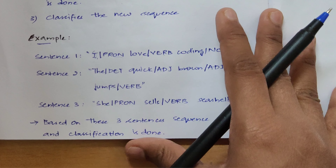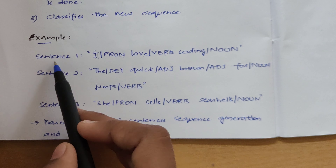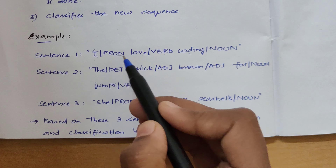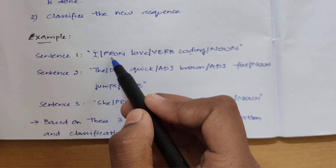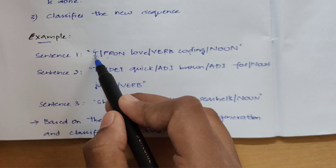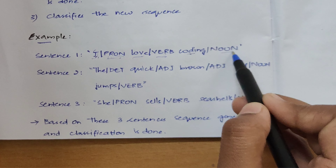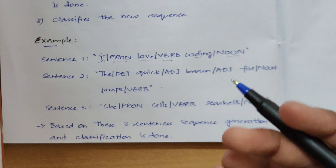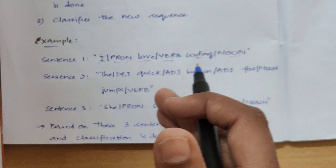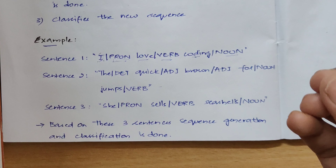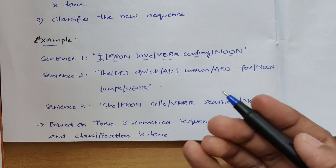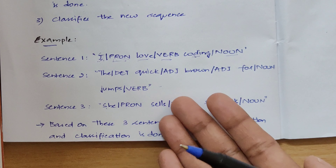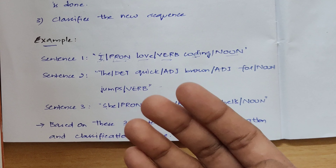Let's look at an example to get a clear understanding of the Hidden Markov Model. I am training the system with three sentences. Sentence one is 'I love coding' — for 'I' I have tagged pronoun, for 'love' I have tagged verb, and for 'coding' I have tagged noun. Sentences two and three follow the same pattern. Now I ask the model to generate a new sequence starting with the word 'she', and it will generate sentences based on whatever examples I have given — possibly combining elements from the training sentences.